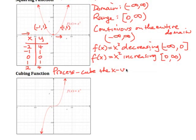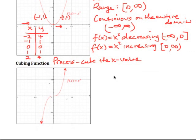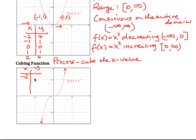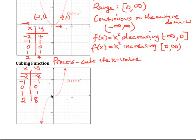The next function is the cubing function — the process is we cube the x value. Looking at values: negative 2 cubed gives negative 8; negative 1 cubed gives negative 1; 0 cubed gives 0; 1 cubed gives 1; and 2 cubed gives 8. So negative 2 maps down to negative 8, and 2 maps up to positive 8, giving us this characteristic cubic shape.